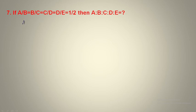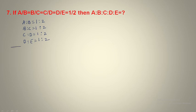The procedure is the same. Whether you are given 4 variables, 3 variables, 5 variables, or n variables, the procedure is the same. First, a is to b = 1 is to 2. Then b is to c = 1 is to 2. Then c is to d = 1 is to 2. Then d is to e = 1 is to 2. So we need to find a is to b is to c is to d is to e.